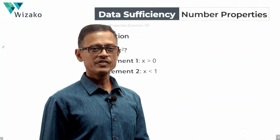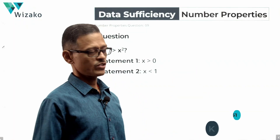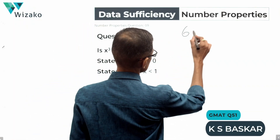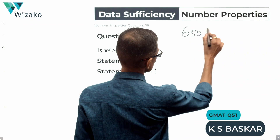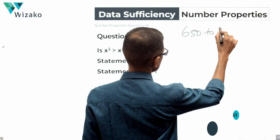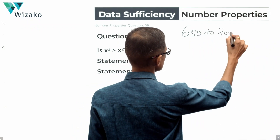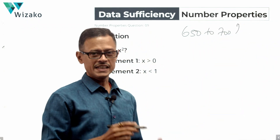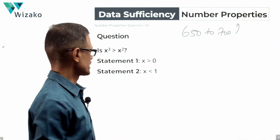Hi everyone. This is a medium difficulty GMAT DS question. I'll classify this as a GMAT 650 to 700 level DS question in number properties and inequalities.